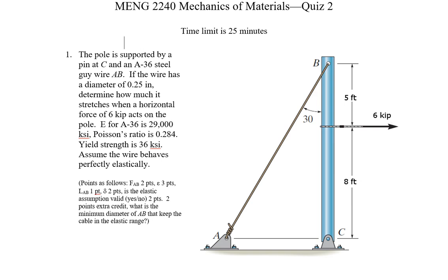We're told the diameter of the wire is 0.25 inches and it's A36 steel. The modulus of elasticity for A36 is 29,000 ksi, Poisson's ratio is 0.284, yield strength is 36 ksi. We're also told to assume the wire behaves perfectly elastically, so we can use Hooke's law where stress equals strain times our modulus.